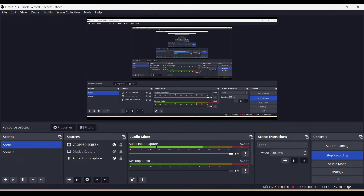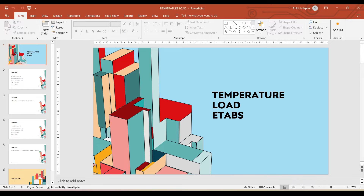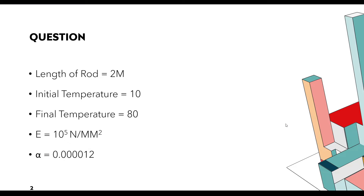Welcome to the Real Civil YouTube channel. In this video we are going to see how to apply the temperature load and how to validate the results. We have one question: the given data is length of rod 2 meter, initial temperature 10 degrees, final temperature 80 degrees, modulus of elasticity E = 10^5 Newton per mm square, and coefficient of thermal expansion alpha = 0.0000012. This is a fixed beam.